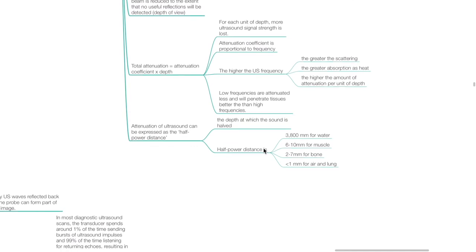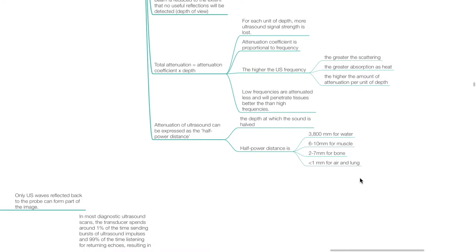Attenuation coefficient is proportional to frequency. The higher the ultrasound frequency, the greater the scattering, the greater the absorption as heat, and the higher the amount of attenuation per unit of depth. Low frequencies are attenuated less and will penetrate tissues better than higher frequencies. Attenuation can be expressed as the half power distance, which refers to the depth at which the sound is halved. The half power distance is 3,800 mm for water, 6–10 mm for muscle, 2–7 mm for bone, and less than 1 mm for air and lung.